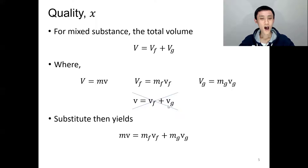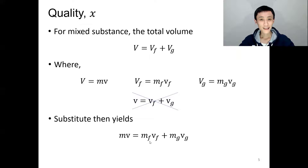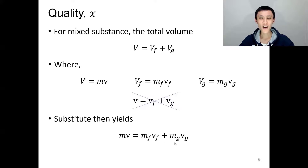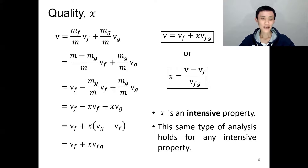Note: you cannot compute specific volume by a simple wrong formula. Let's plug in all the volumes into the first formula: total volume equals overall mass times specific volume, which equals m_liquid times v_f plus m_gas times v_g. Moving the overall mass to the other side, then substituting that the mass of liquid equals the overall mass minus the mass of gas, the mass terms cancel. The mass of vapor divided by overall mass is defined as quality x, so we replace that term with x.